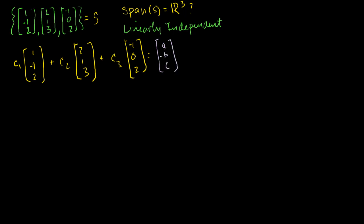Where A, B, and C are any real numbers. If you give me any A, B, and C, and I can give you a formula telling you what C3, C2, and C1 are, then that essentially means these vectors span R3. Because if you give me a vector, I can always tell you how to construct that vector with these three.